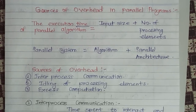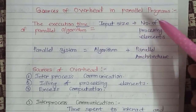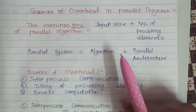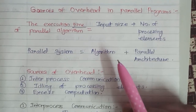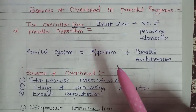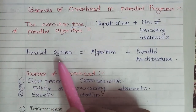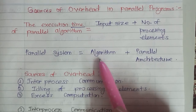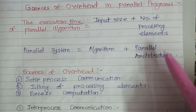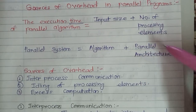This video explains the sources of overhead in parallel programs — what are the different difficulties or shortcomings that exist. Wherever we talk about a parallel system, it is a combination of a parallel algorithm plus parallel architecture, and the parallel architecture is the most important part responsible for the overhead.